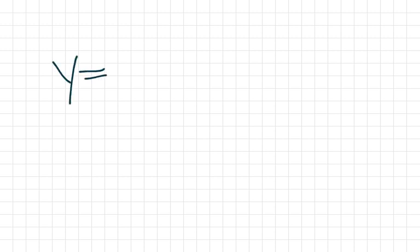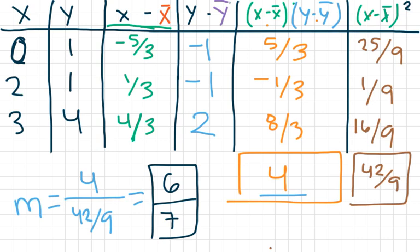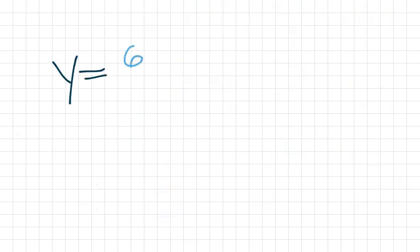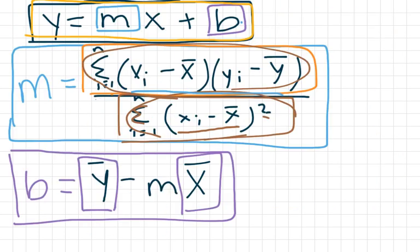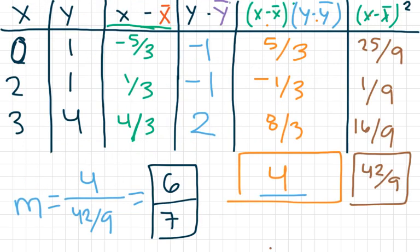So far, for my line of best fit I have y equals six sevenths x. That six sevenths is our slope — y equals mx. Now I need to find b. How we find b is by plugging in the mean values for x and y and solving: b equals ȳ minus m times x̄.